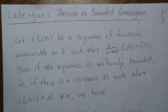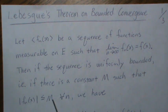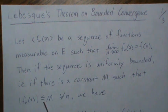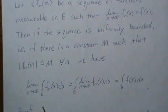Then if the sequence is uniformly bounded, and that means there's a constant M such that the absolute value of the f_n's are less than or equal to M and that's for all n, then we have this equation here.